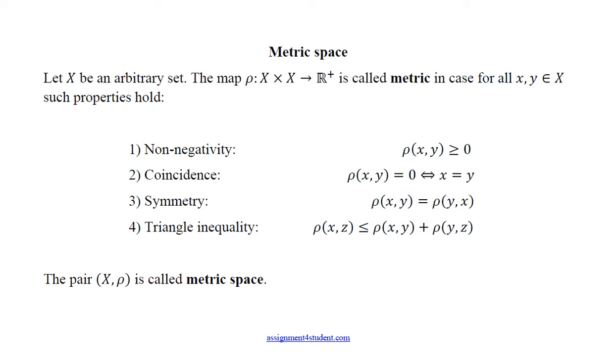Metric space. Again, let X be any set. Let's define the metric on it. The metric is the map which satisfies these four simple conditions. In this case the pair (X, ρ) is called metric space.